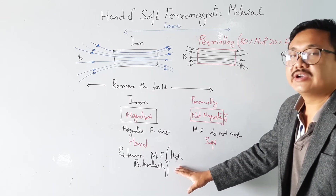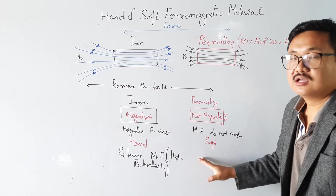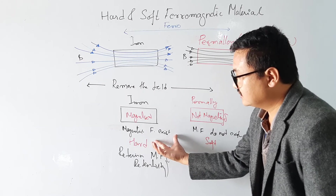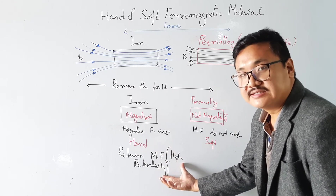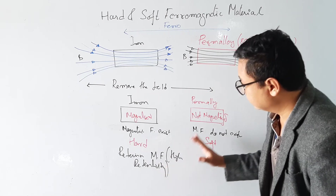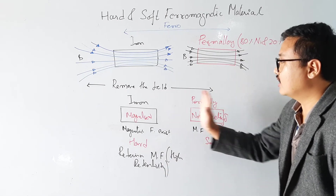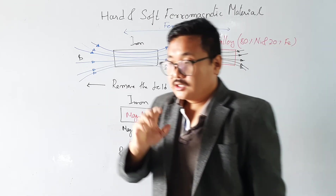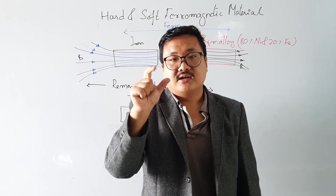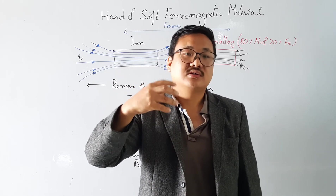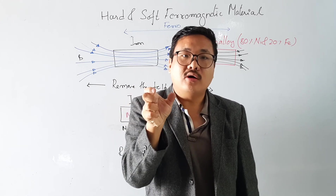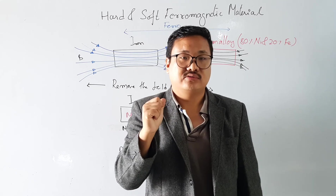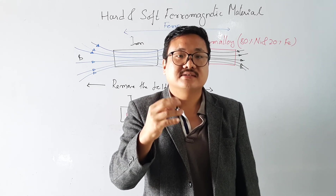In hard material, the magnetic field is retained within the material — it has high retentivity. In soft material like Permalloy, there is no retention of the magnetic field — so it has no retentivity. These two are the soft and hard magnetic materials. We have studied that the core of a solenoid and the core of a moving coil galvanometer must have a soft iron core, and why — that will be explained in the next lesson.